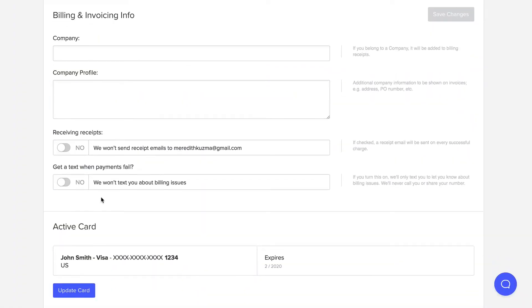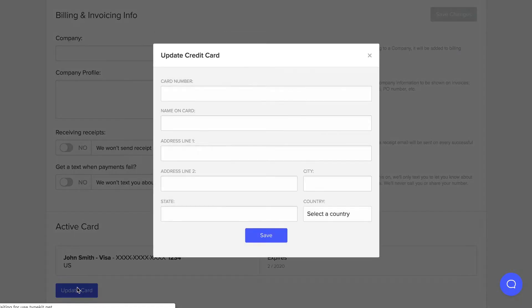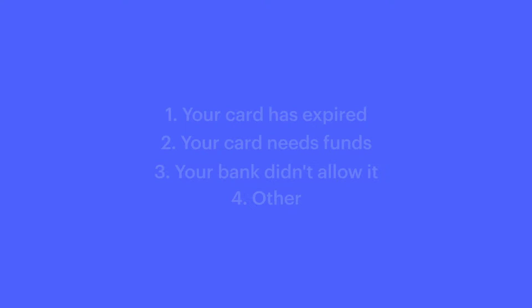Sometimes credit card payments go through, sometimes they don't. We deal with this all the time, so it's not just you — but in this case, it could be you. There are generally four categories into which this type of situation falls, and we are unable to see this for everyone, so check each of these if you're unsure.